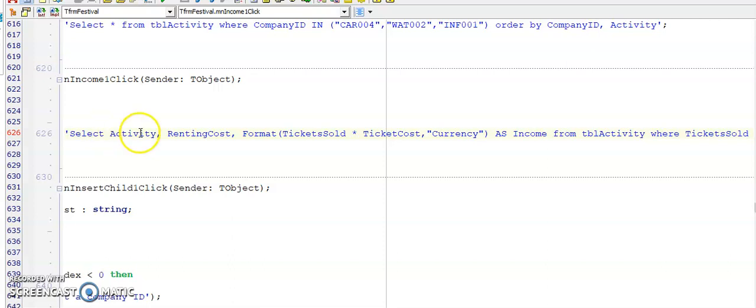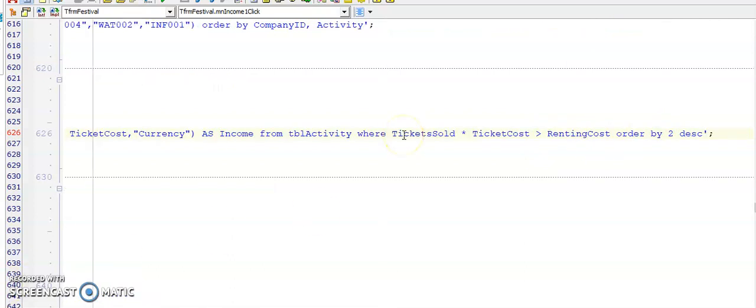Here is the memo for the income menu. I had to display the description of the activity and the renting cost, and then I had to calculate the income. That would be the number of tickets they sold multiplied by the cost per ticket, displayed as a currency. You'll see Format here in the front, and then at the top my heading said AS income. The data for the ticket sold and ticket cost sits in the activity table, so FROM TBL activity.